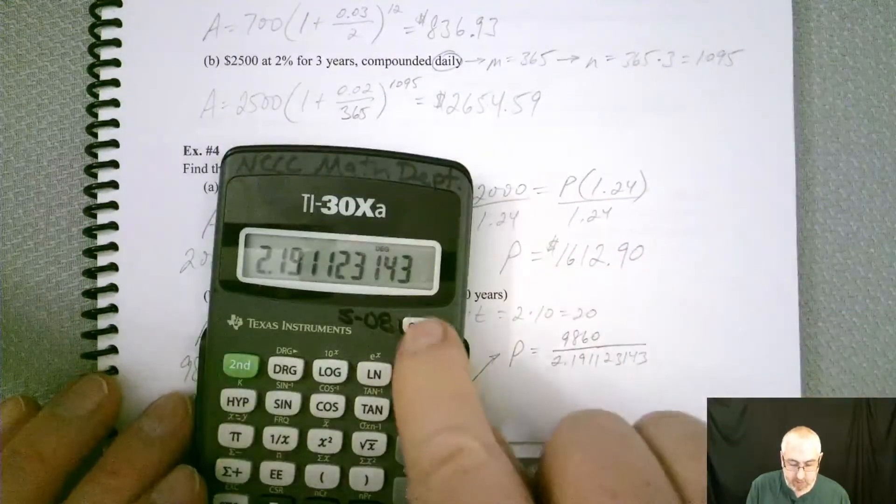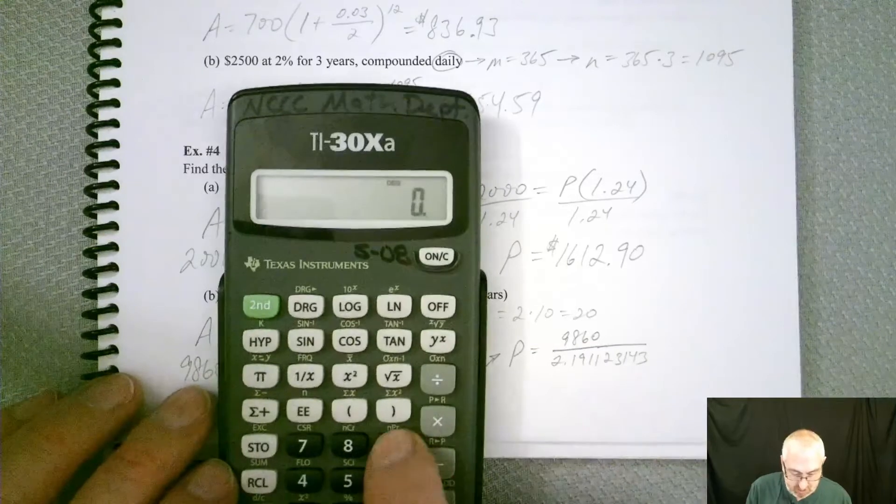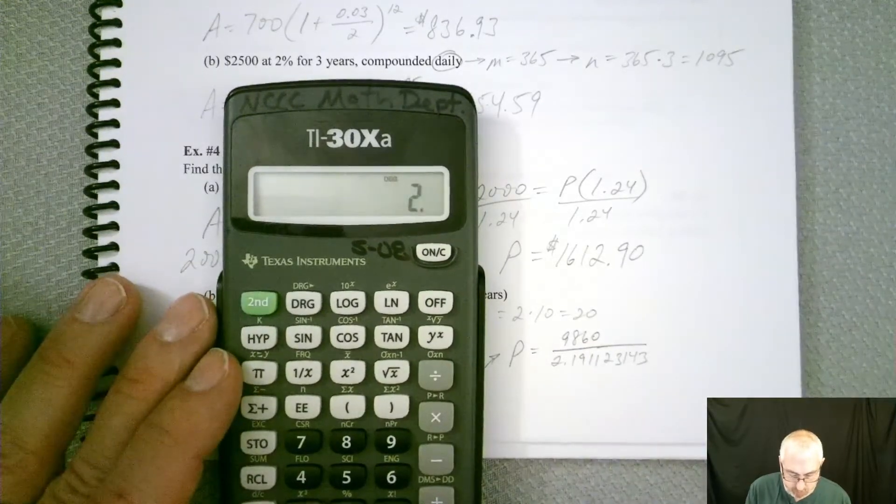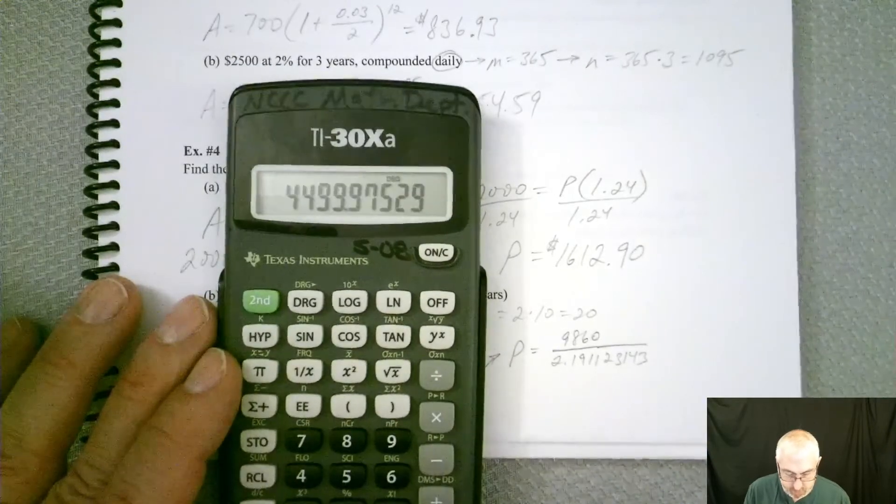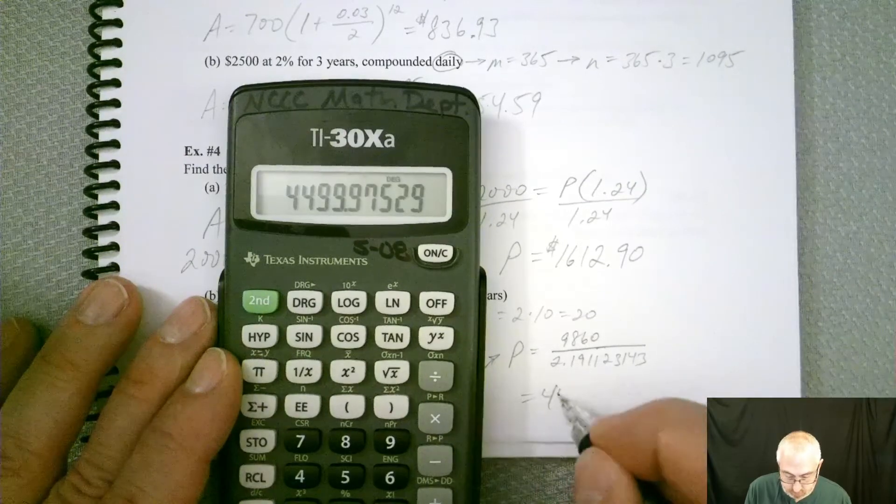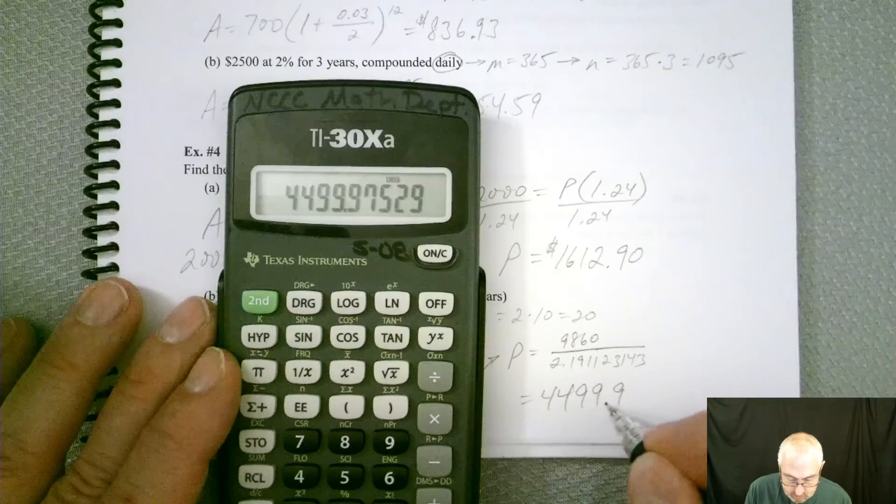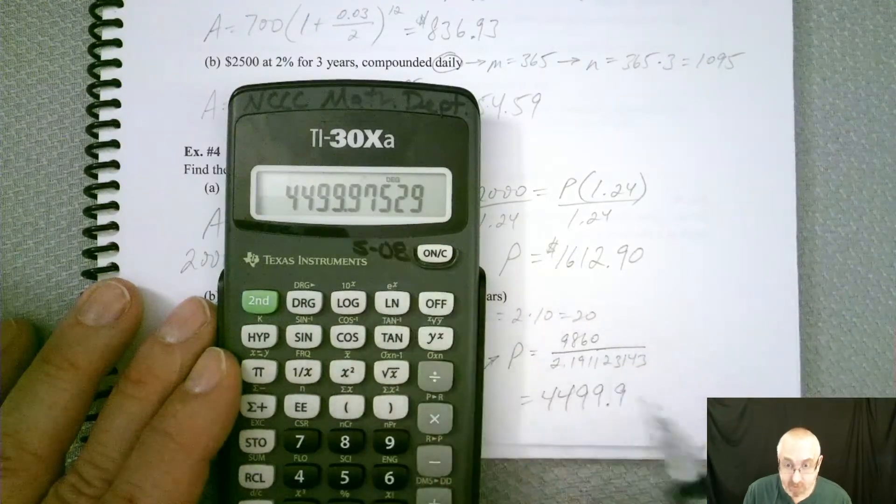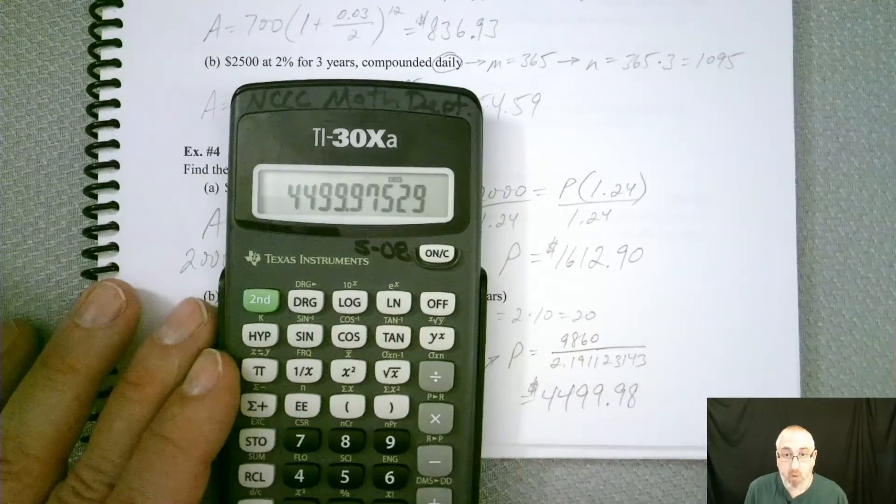All right. So let me, I'm going to put that first number on top though. So 9,860 divided by 2.191123143. So we got $4,499 and 90, well, the five is next to it. So that's going to bounce that seven up to an eight. So almost $4,500.